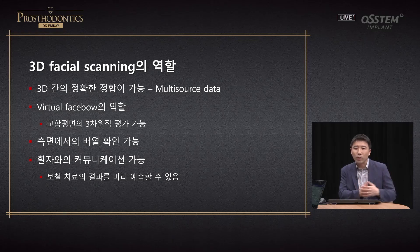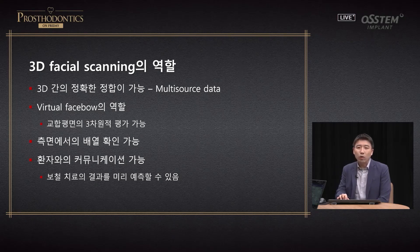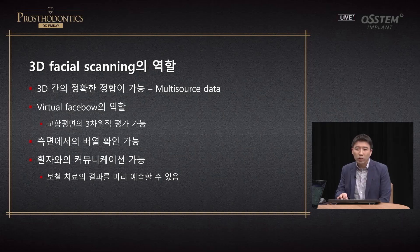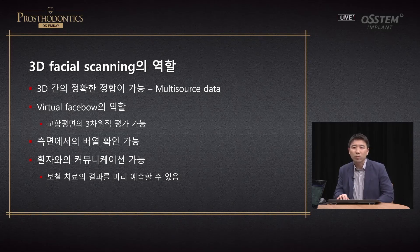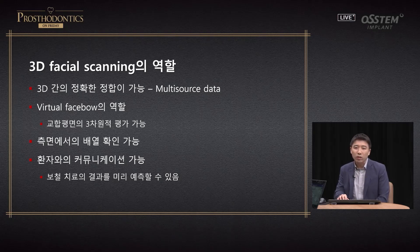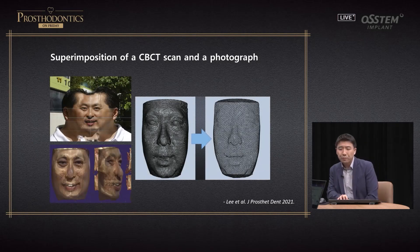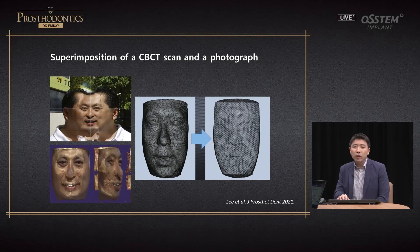You can merge arch scan data with CBCT for accurate registration. Facial scan data also serves as a virtual face bow, helping analyze the occlusal plane. Unlike 2D images, you can view the lateral profile, check how the prosthesis will look from different angles, analyze existing dentition, and improve communication with both the patient and lab technicians. I will now talk about how to acquire facial data.